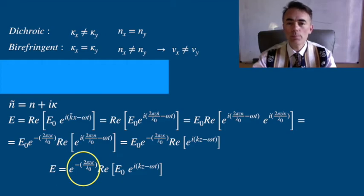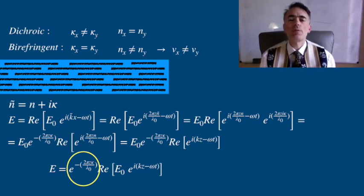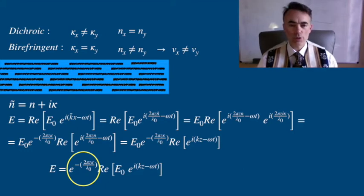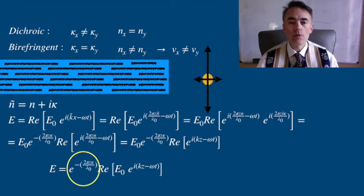This happens because of the structure of the polymer or the crystal that have a differentiated structure depending on the direction. Then electrons will be able to follow better or worse the oscillations in one direction than in the other. Having it harder for the electrons to follow the oscillations of light will make that the index of refraction of each axis will be different.